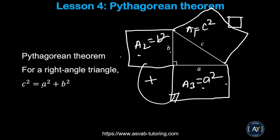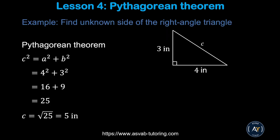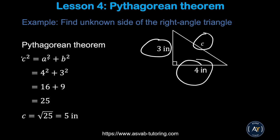Let's apply the formula to a practice problem. This right triangle has sides of 3 and 4 — find c. Using a squared plus b squared equals c squared: 4 squared plus 3 squared is 16 plus 9 equals 25, so c equals 5.